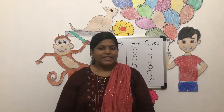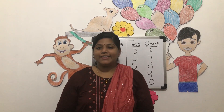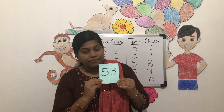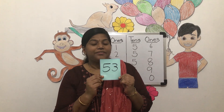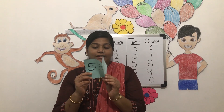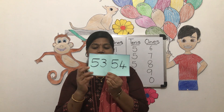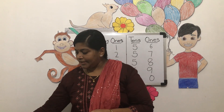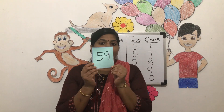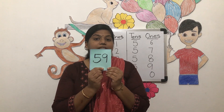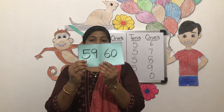Now let's look at after, before, and between numbers. You have to help me find out — what comes after, what comes before, and what comes between. First, what comes after 53? After 53 we have 54. Now tell me, what comes after 59? It is 60. After 59 comes 60.